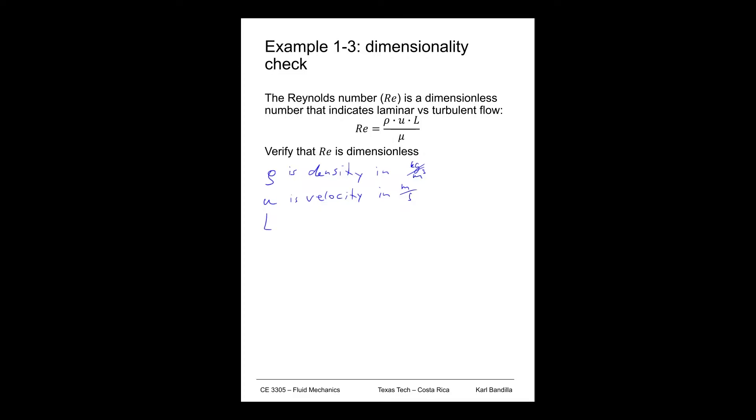Then capital L is characteristic length. And that length, of course, would be in meters. And then the viscosity, mu is the viscosity. And that is given in Newton times seconds divided by square meters.